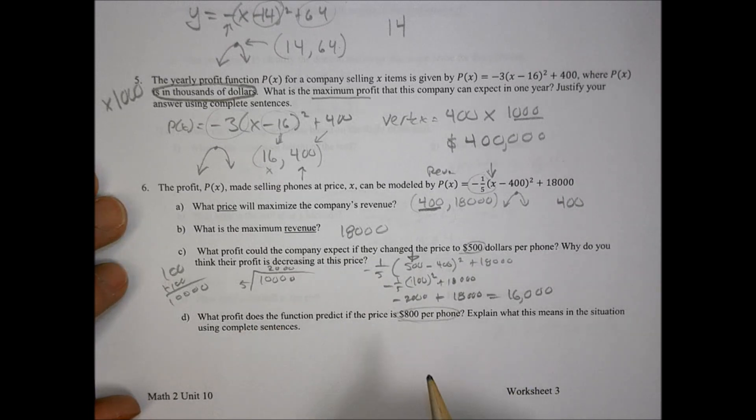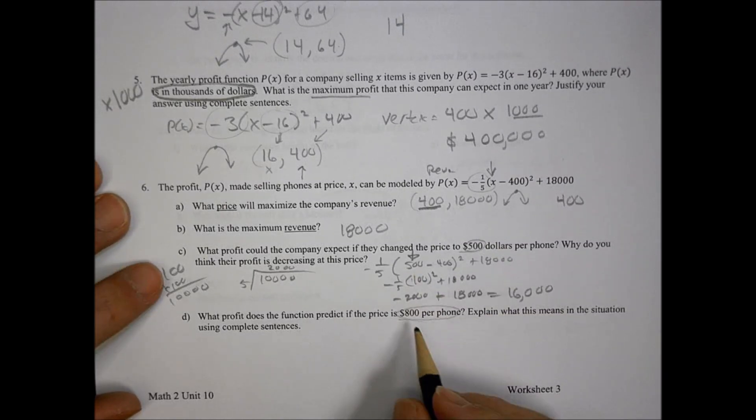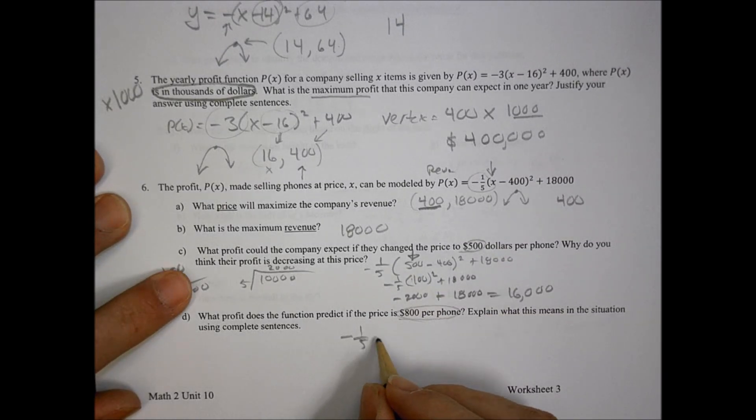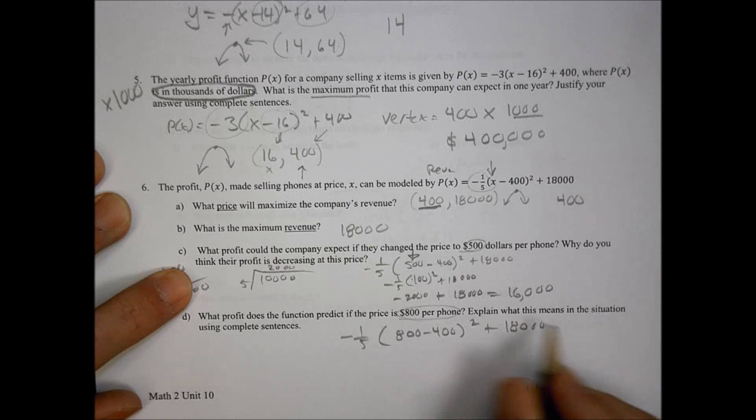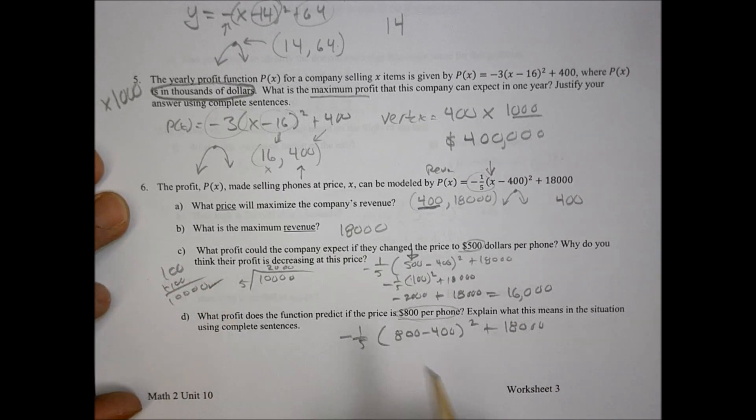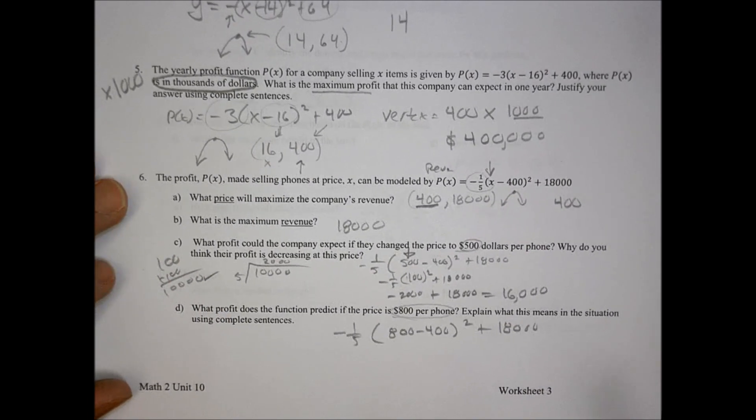What does the profit function predict if the price is $800 per phone? Same idea we did before. If you plug that number in there for 800, negative one-fifth times (800 minus 400) squared plus 18,000, that's going to give you the number. I did C, I'm going to let you do D and call it a day and we'll see you next time.